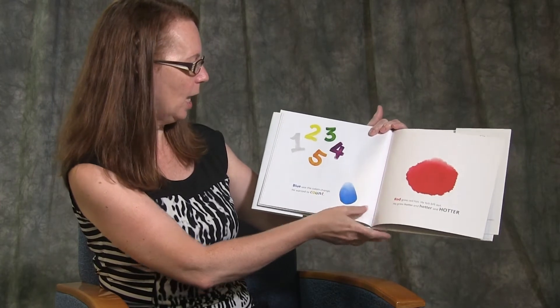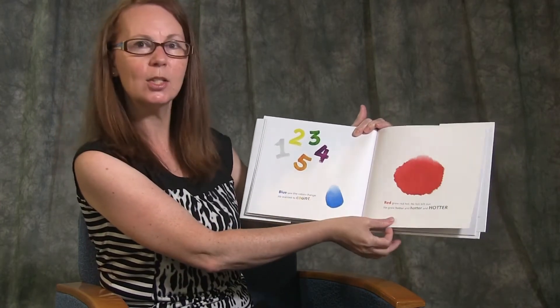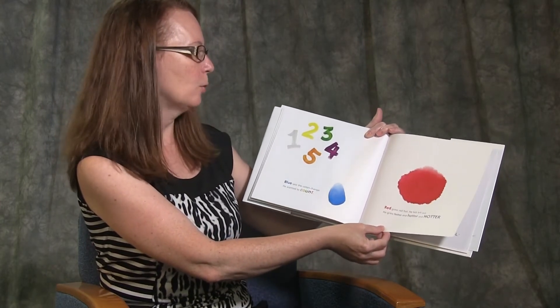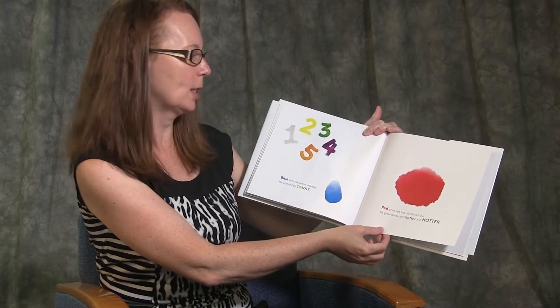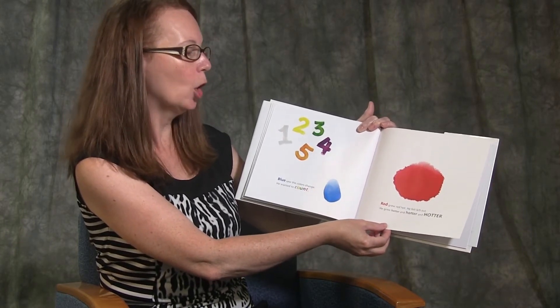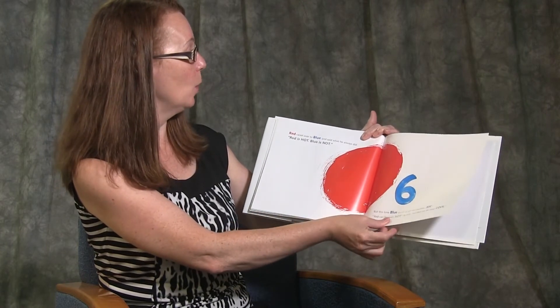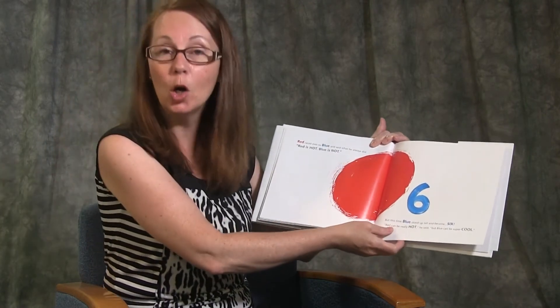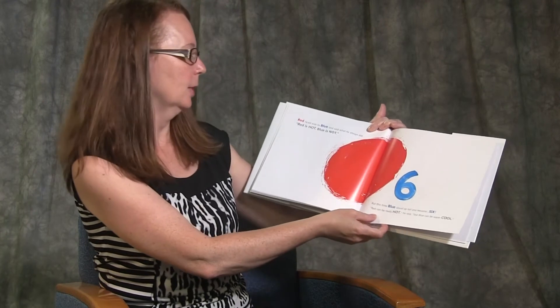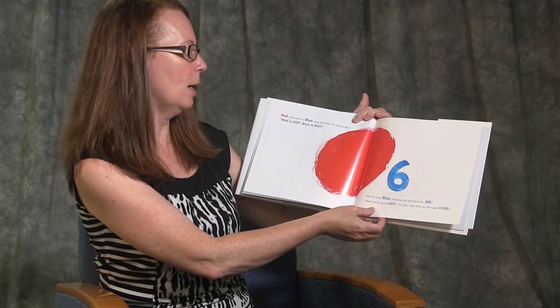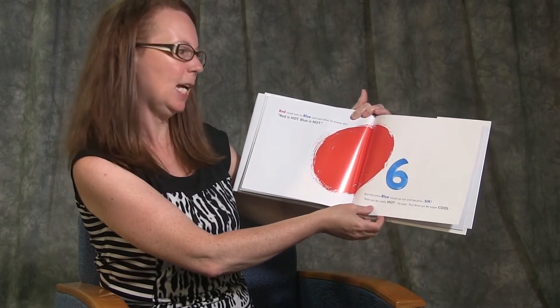Blue saw the colours change. He wanted to count. Red grew red hot. He felt left out. He grew hotter and hotter and hotter. Red raced over to blue and said what he'd always did. Red is hot. Blue is not. But this time blue stood up tall and became six.